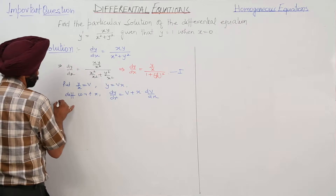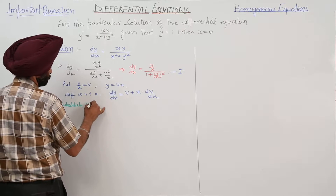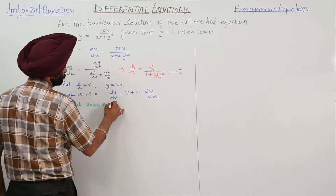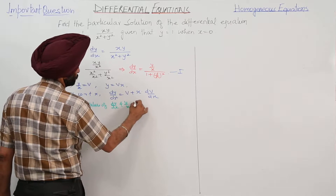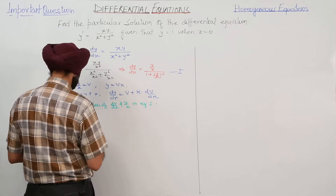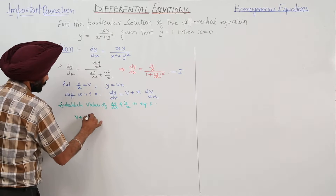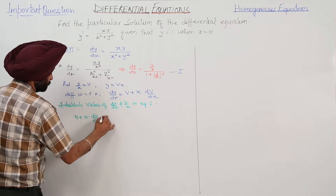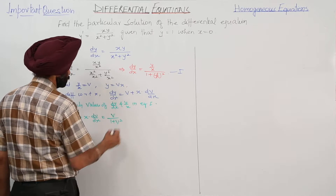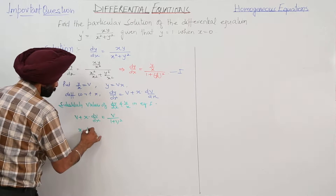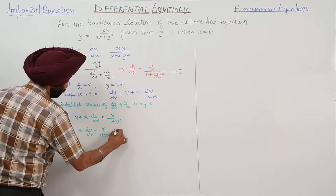Now substituting the values of dy/dx and y/x into equation 1: v + x·(dv/dx) = v / (1 + v²) minus v.